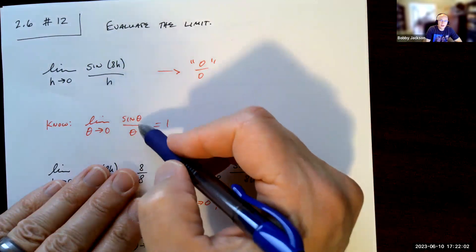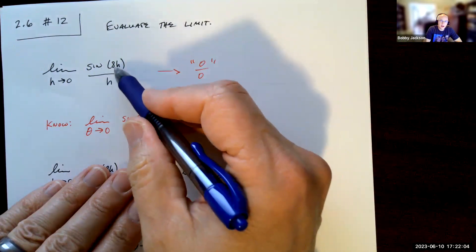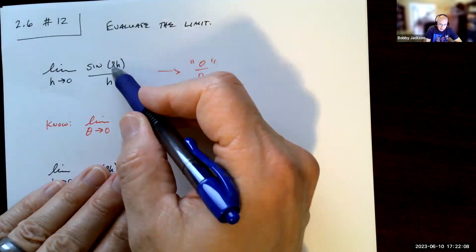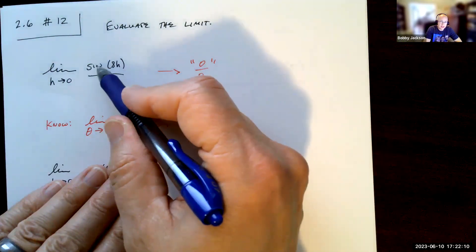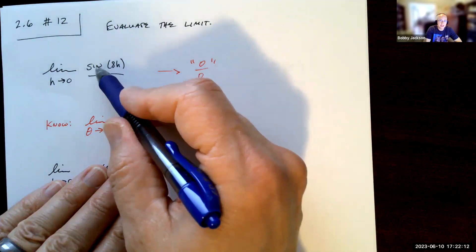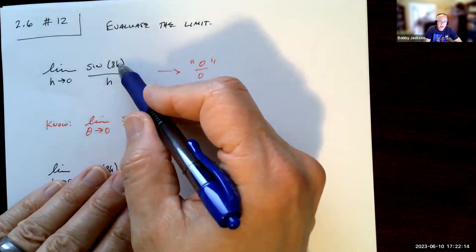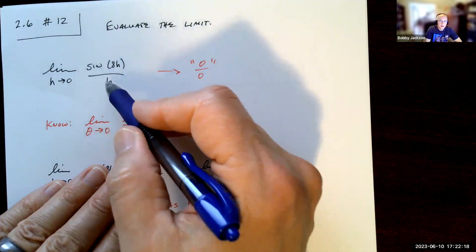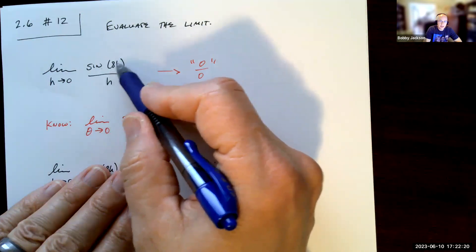It's not sine of theta over theta. I would need the same thing that I've taken the sine of. Now this 8 cannot be pulled out. This is not sine times h, this is sine of 8h. It's not multiplication going on here, so this 8 cannot come out.